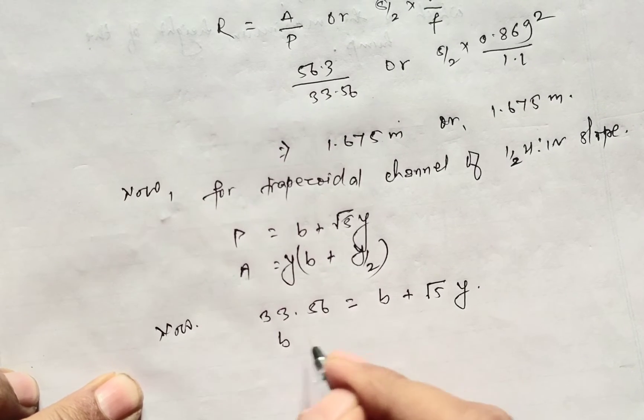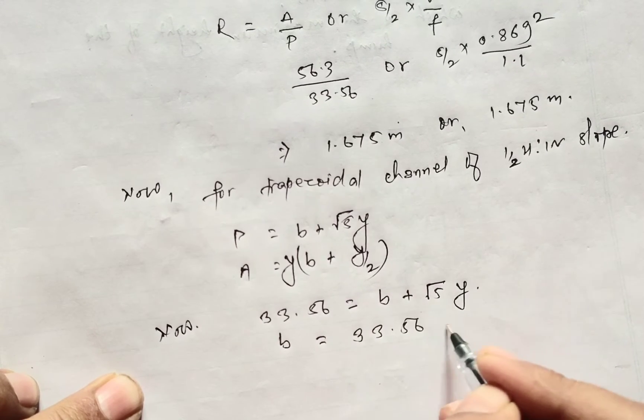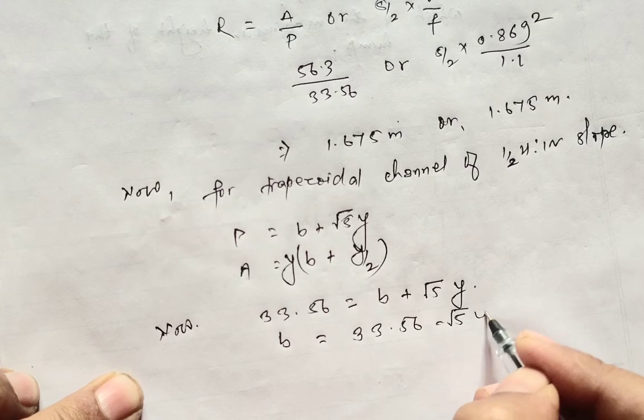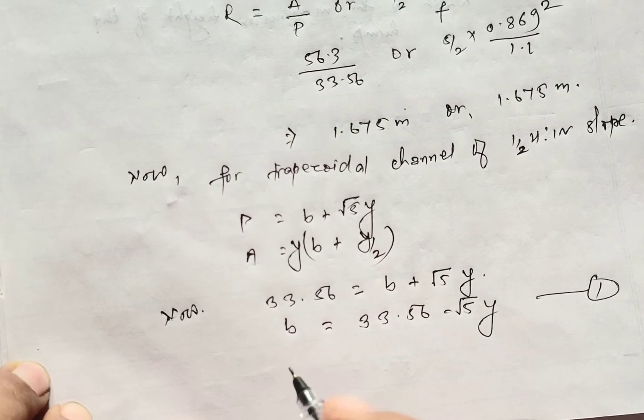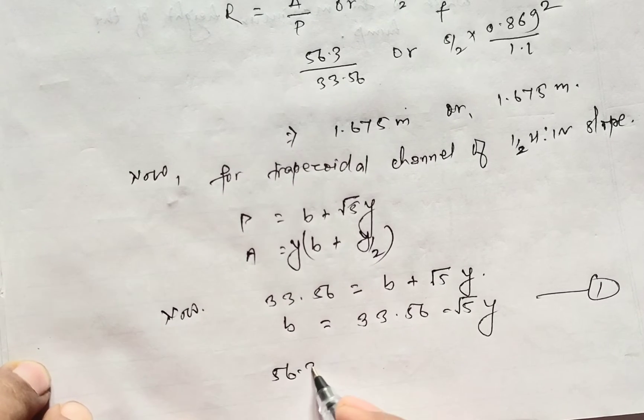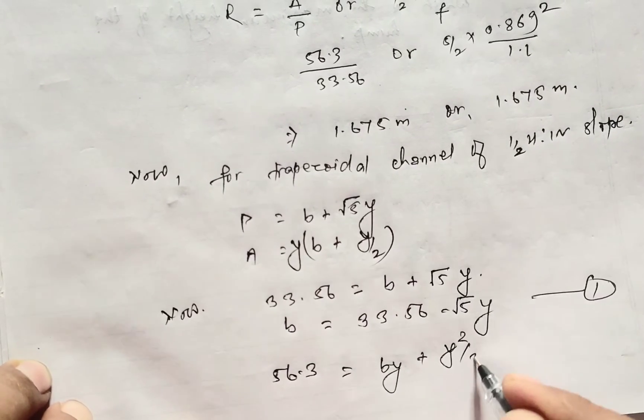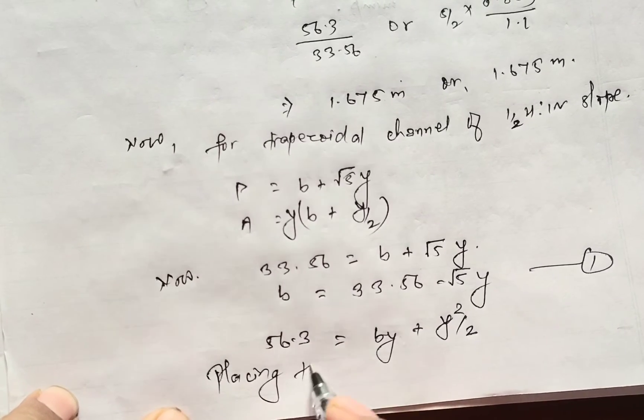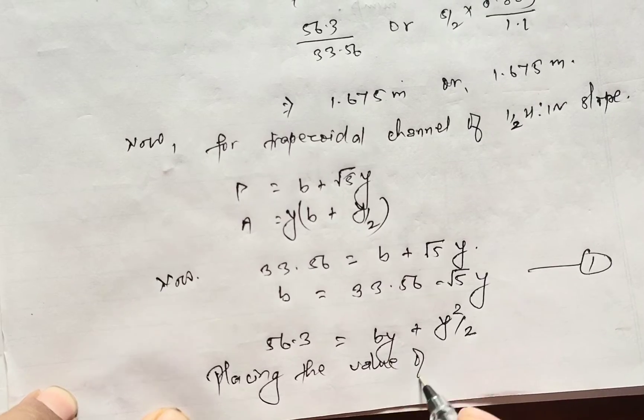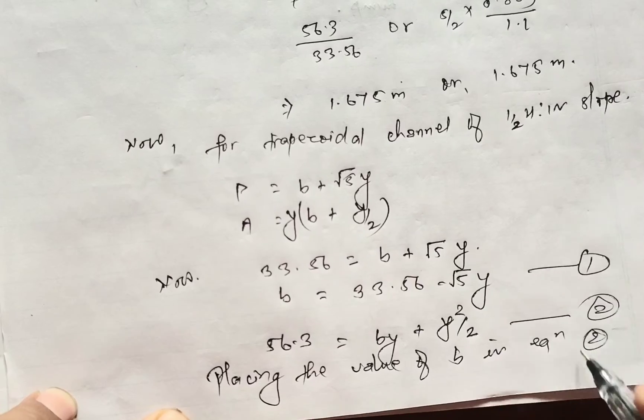Where B equals 33.56 minus root over 5Y - this is equation 1. And for the area, A is already calculated as 56.3, which equals B plus Y square by 2.